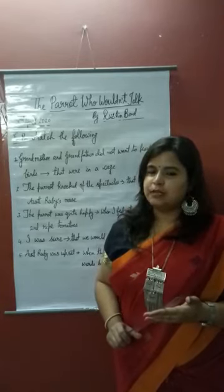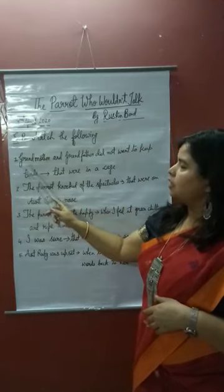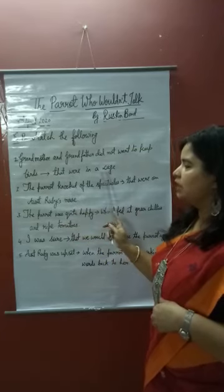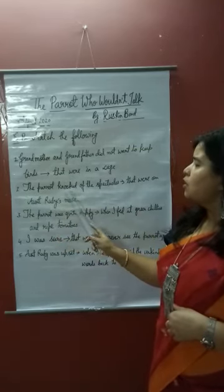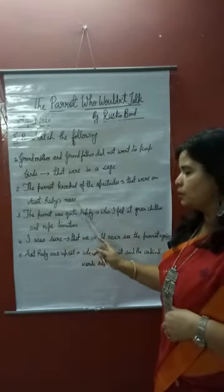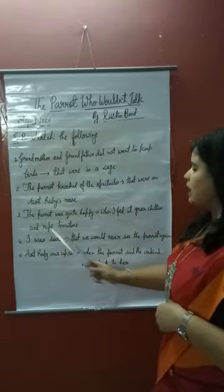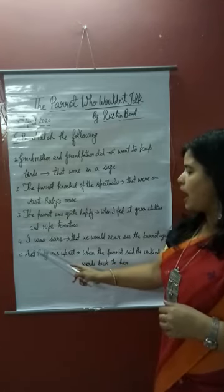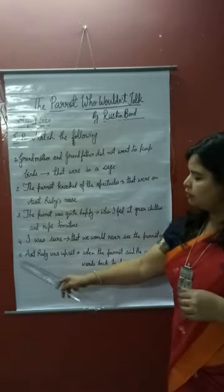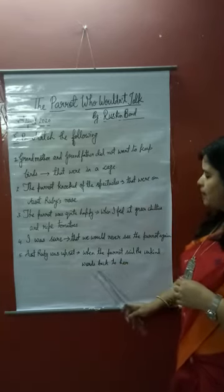Now we will move on to Exercise B, which is match the following. Number 1: Grandmother and grandfather did not want to keep birds that were in a cage. Second: the parrot knocked off the spectacles that were on Aunt Ruby's nose. Third: the parrot was quite happy when fed green chilies and ripe tomatoes. Fourth: I was sure that we would never see the parrot again. Number 5: Aunt Ruby was upset when the parrot said the unkind words back to her.